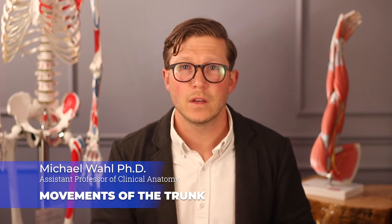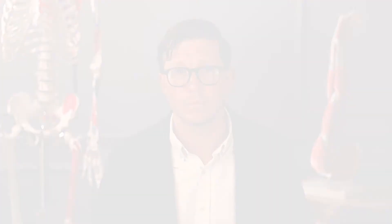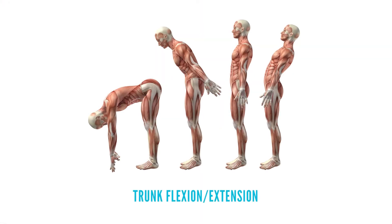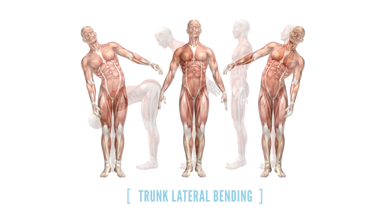Various terms describe movements of the limbs and other parts of the body. Most movements are defined in relation to the anatomical position. Most movements occur at joints where two or more bones articulate with one another.